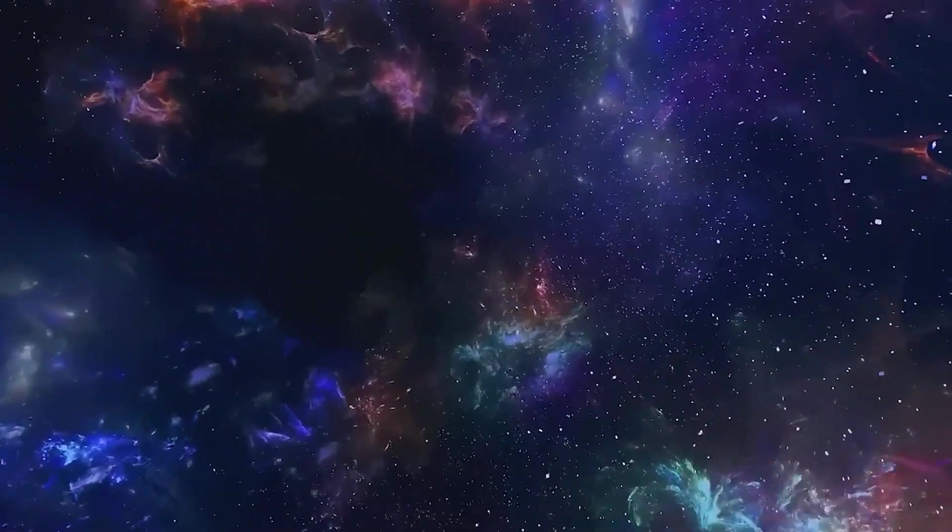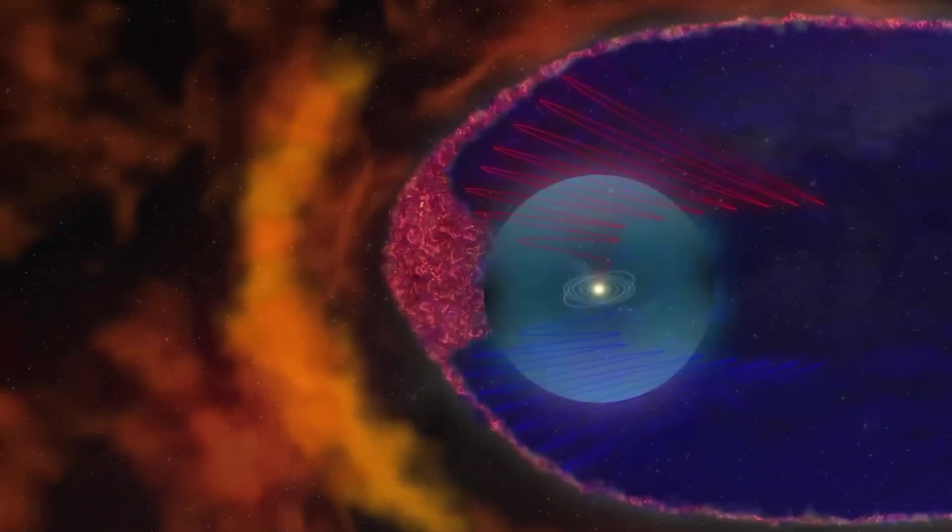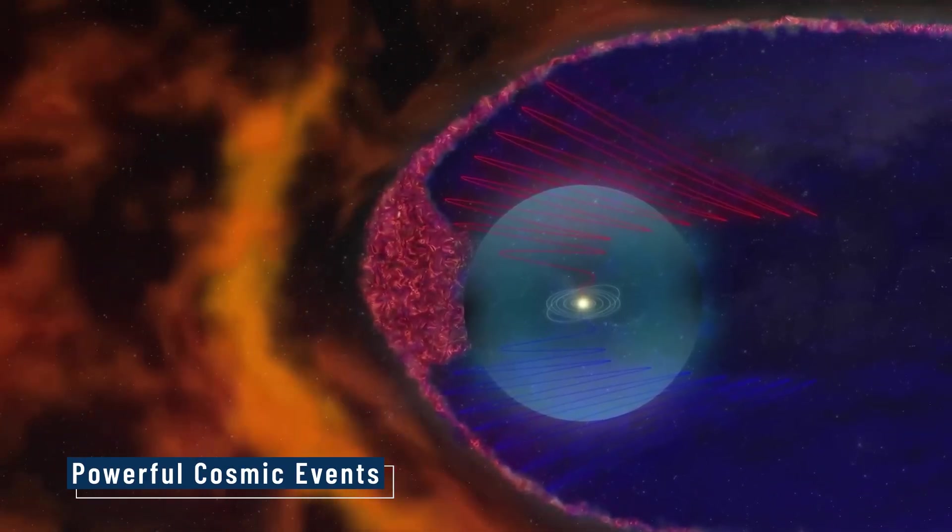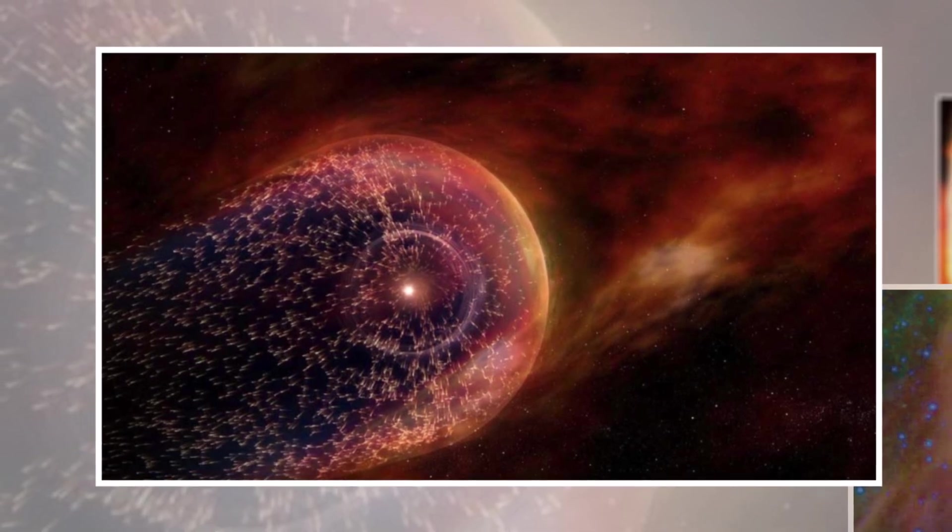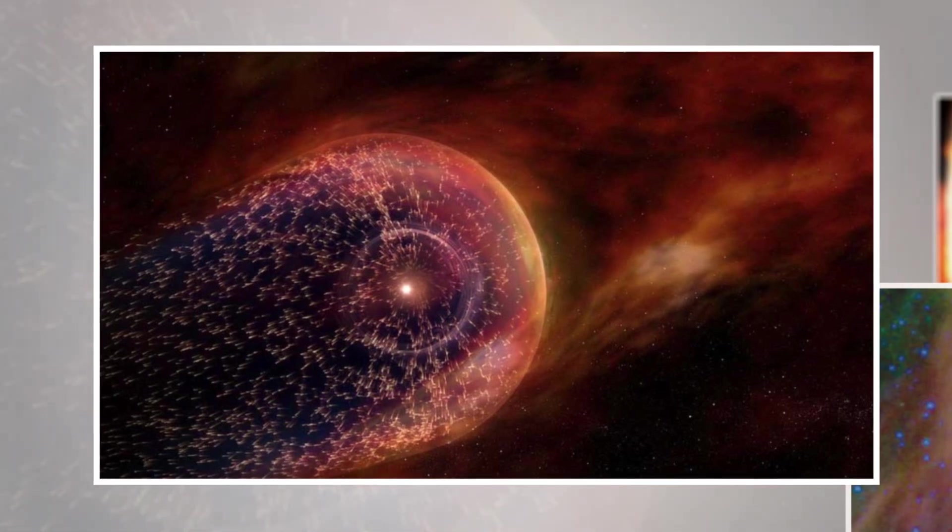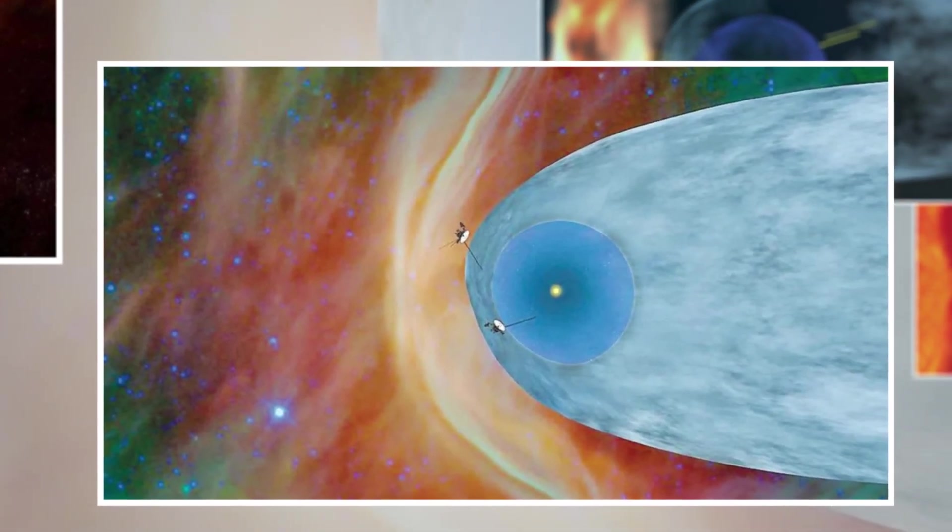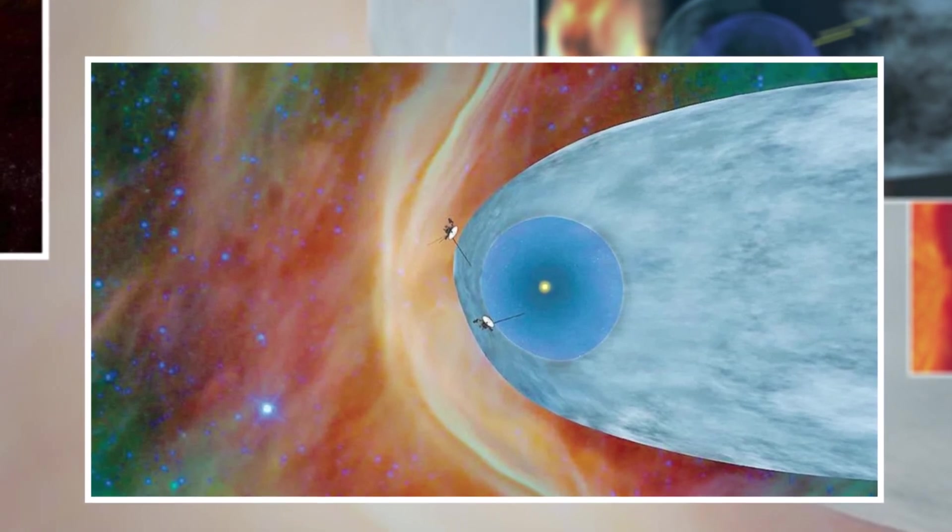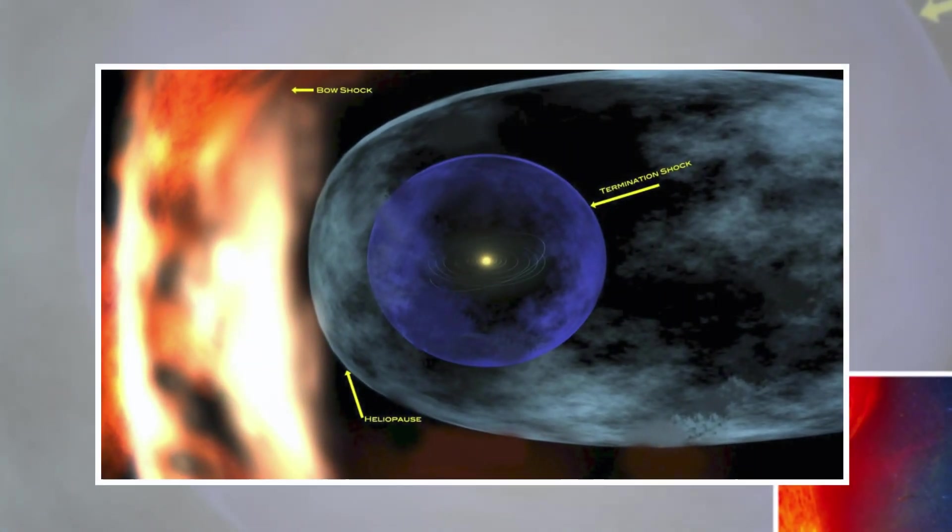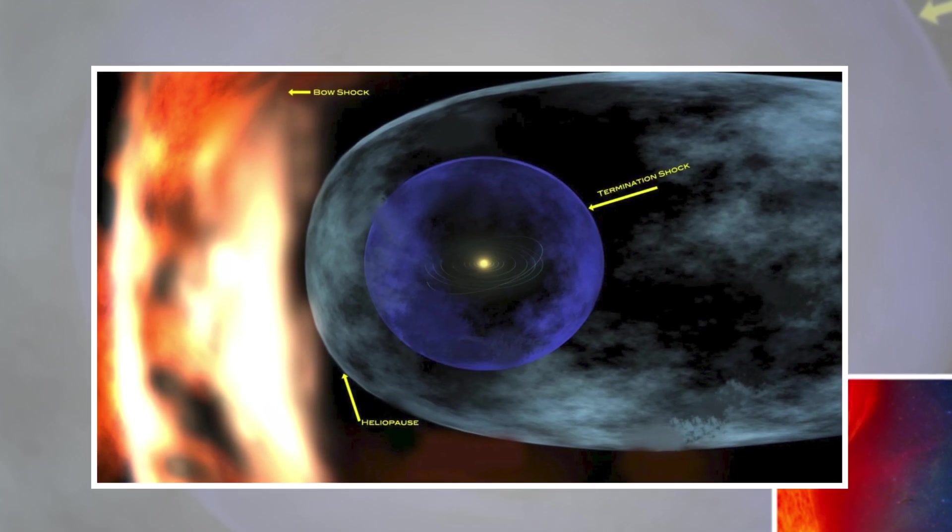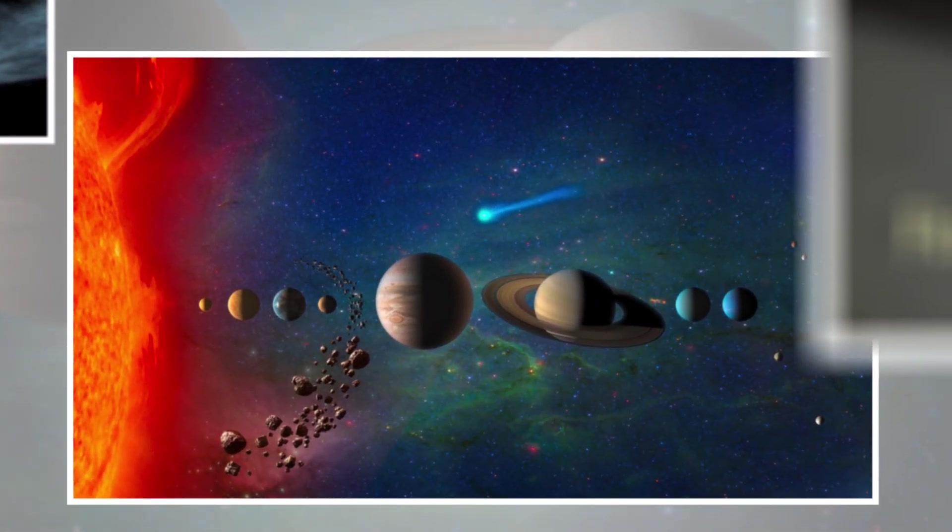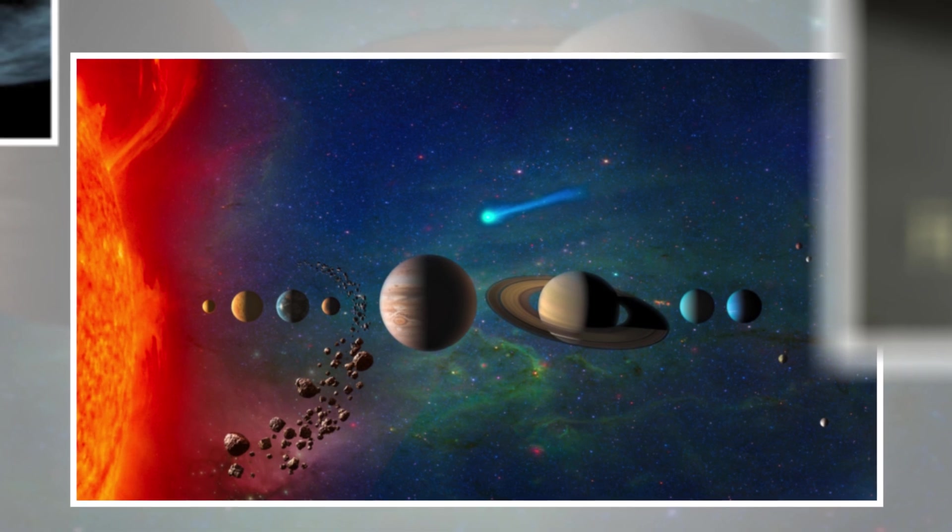Along with plasma waves, Voyager 2 detected intense bursts of cosmic rays, high-energy particles originating from distant supernovae and other powerful cosmic events. These rays bombard the solar system's edge, posing significant risks to spacecraft and eventually to human explorers venturing beyond Earth's protective magnetosphere. Voyager 2's data confirmed the heliosphere acts as an essential shield, protecting our planet from much of this lethal radiation. However, the variability and turbulence observed indicate that this shield is not uniform. It fluctuates with cosmic conditions, meaning the frontier of our solar system is a highly active, unpredictable zone.